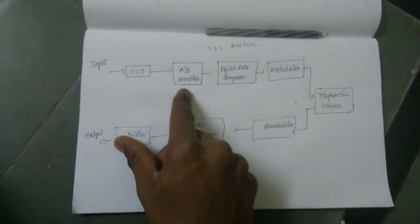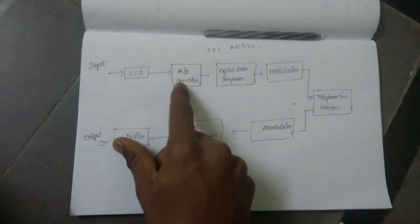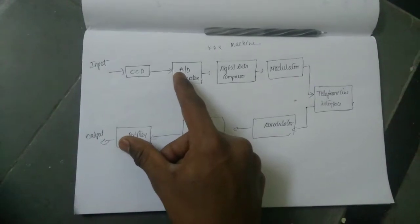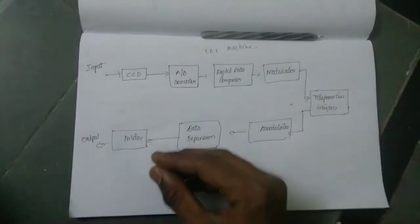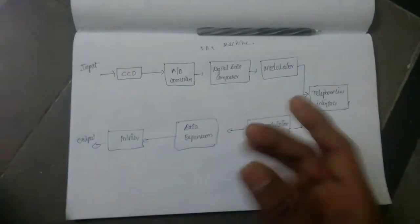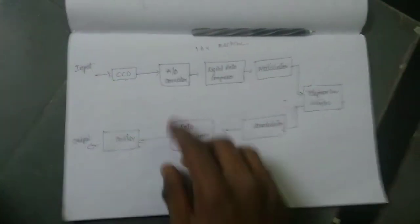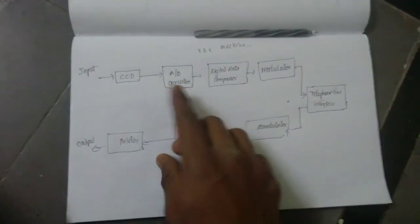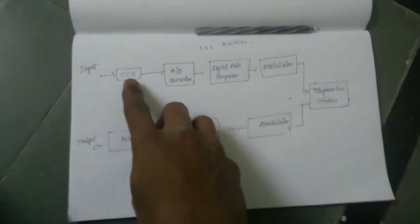The next block is the A2D converter. The A2D converter is a type of converter which converts the analog information into digital information — analog signal into digital signal.